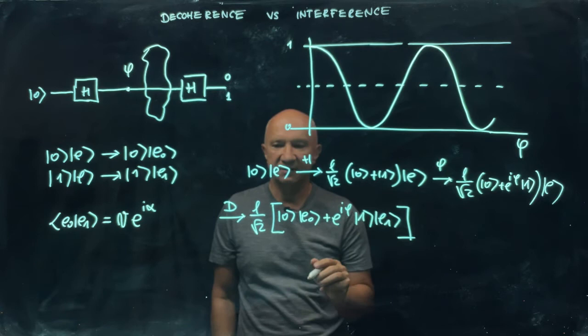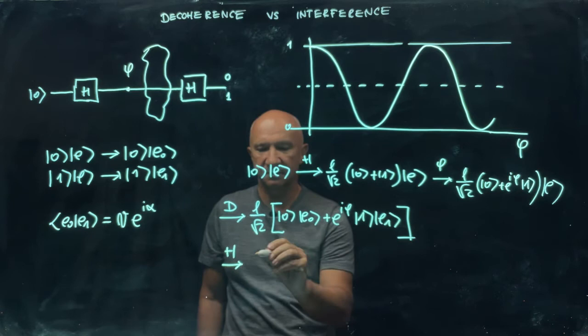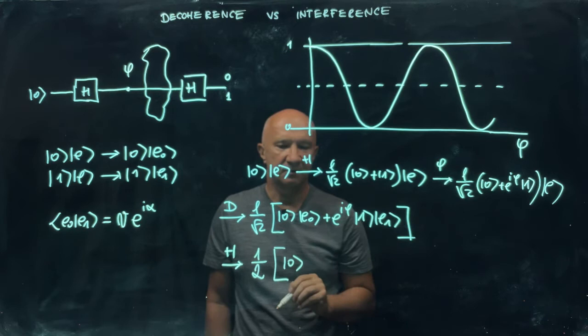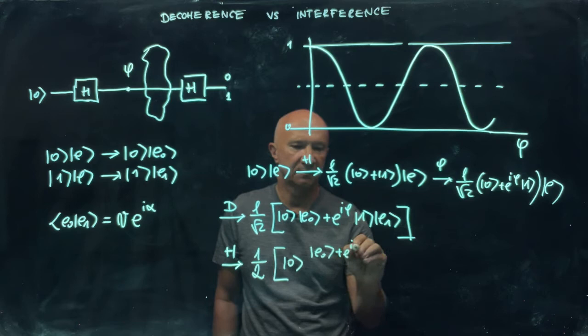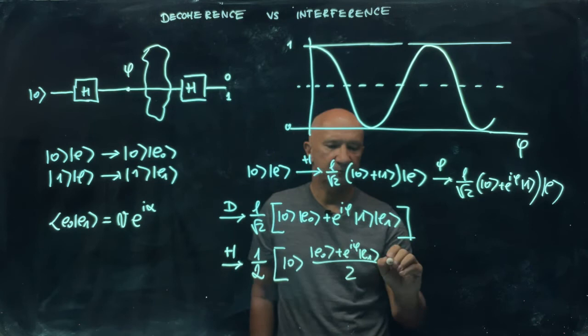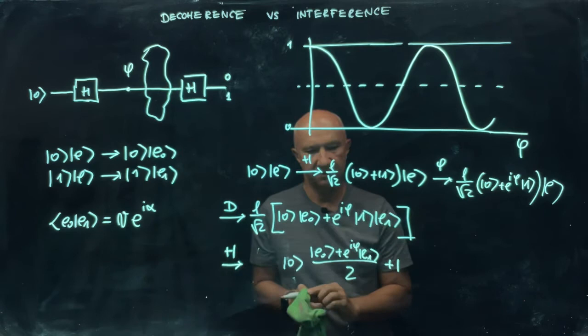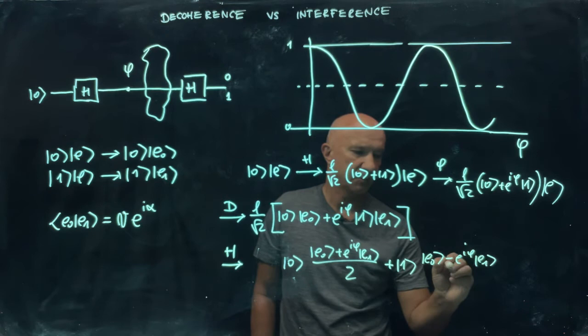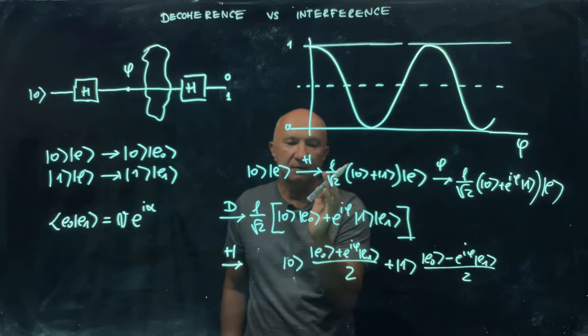Okay. So that's the state after decoherence. After this blob here, which denotes decoherence. And then we still have the Hadamard gate. So after the Hadamard, the second Hadamard, let me just write this as one over two. And I'm just going to collect terms on the environment side. So I'm going to have here E0 plus e^(iφ) E1 over two. Let me just correct this. It will be this one here. E0 minus e^(iφ) E1 over two.